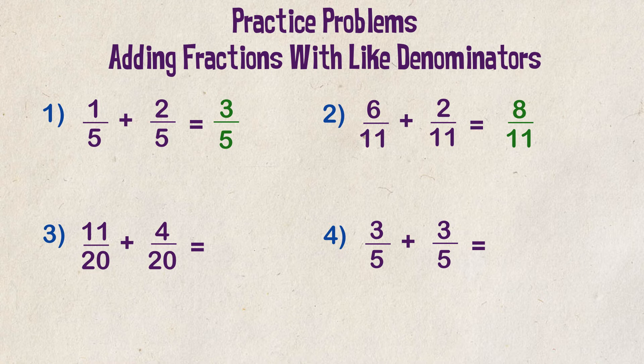Example three. Eleven twentieths plus four twentieths. We add 11 to four and we get a total of fifteen. Put that over the denominator of twenty and we get a total of fifteen over twenty.